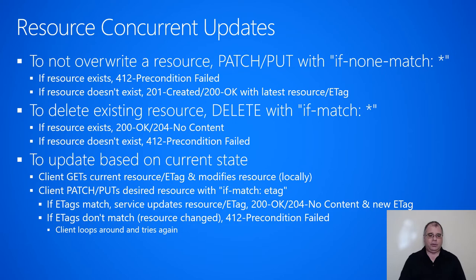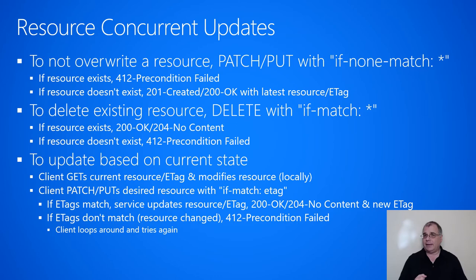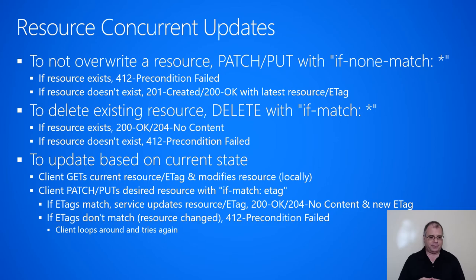To delete an existing resource, you can use the DELETE method along with the if-match request header with a star. This tells the server to delete the resource identified by the URL path, but only if it actually exists — the star is a wildcard meaning match anything. If the resource does exist, the service returns a 200 OK or possibly a 204 No Content, depending on whether you want to return the last state of the resource. If it doesn't exist, you return a 412 Precondition Failed. This delete scenario is pretty unusual — most services just accept a delete, ignore the headers, and return a 200 or 204. Earlier in this course I discussed why it's best not to return a 404 if the resource doesn't exist.